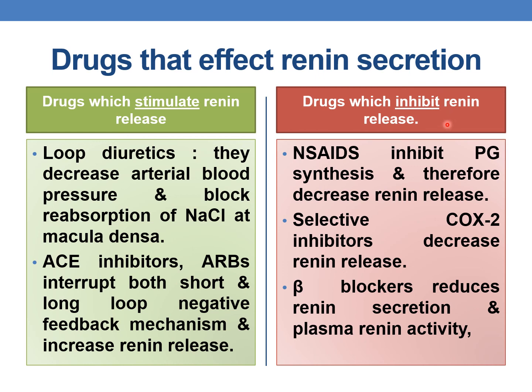Drugs which inhibit renin release include NSAIDs, which inhibit prostaglandin synthesis and therefore decrease renin release. Similarly, selective COX-2 inhibitors also decrease renin release. Beta-blockers also reduce renin secretion and plasma renin activity. Thank you for watching — please subscribe for further videos on pharmacology and related pharmaceutical sciences.